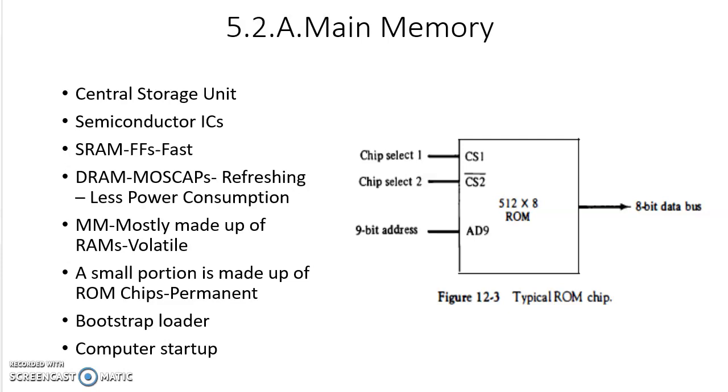In computers generally the memories are divided into three groups: cache memory, main memory, and secondary memory. Main memory is also called primary memory. Secondary memory is also called auxiliary memory.